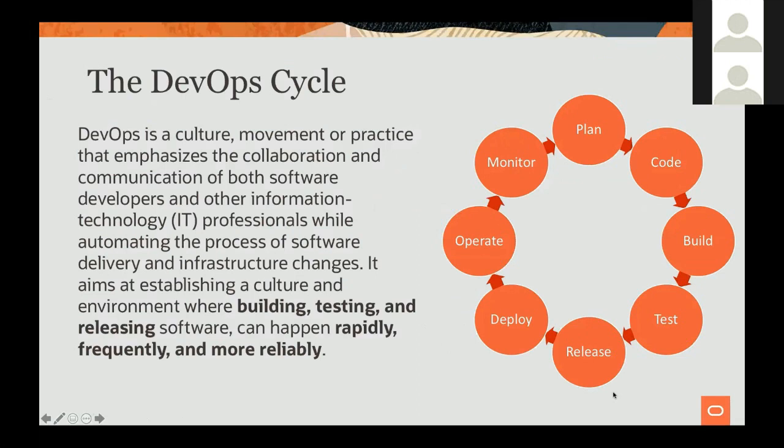So to start, let's talk about what DevOps is. DevOps is an iterative process where you go through cycles of steps: starting from planning what you're going to do, coding, building your application, testing it, and if everything goes according to plan, you release and deploy the application. Then you operate the application on a regular basis, monitor it, get feedback, and go into the next phase of planning, coding, and running through this cycle again.